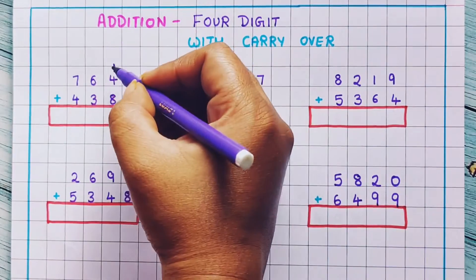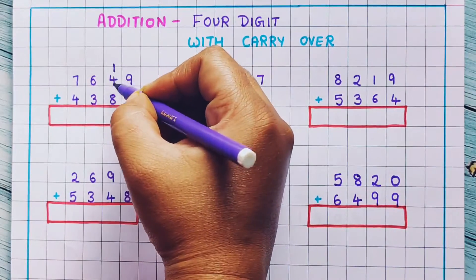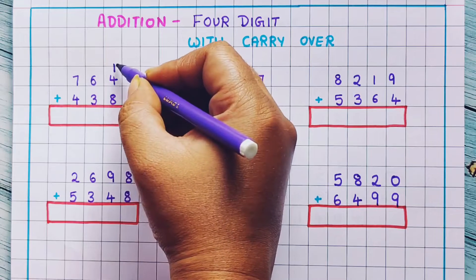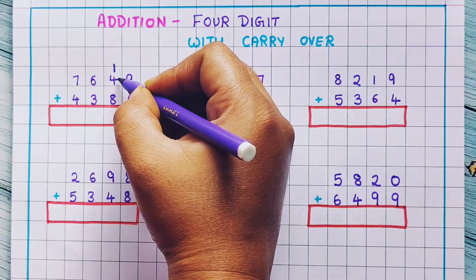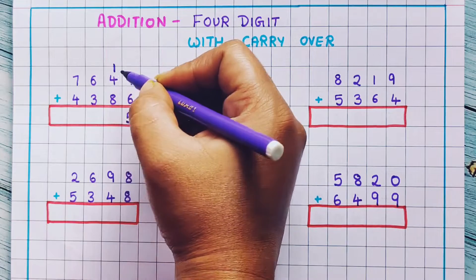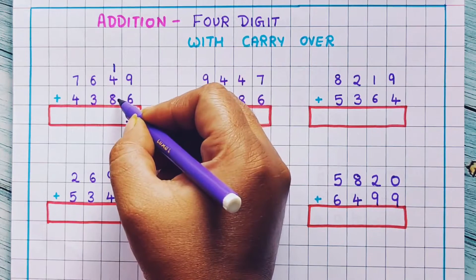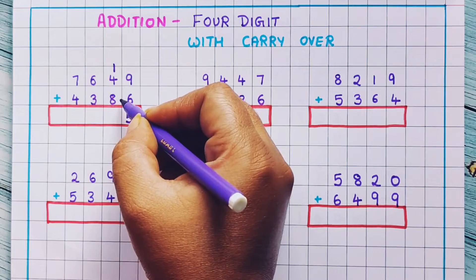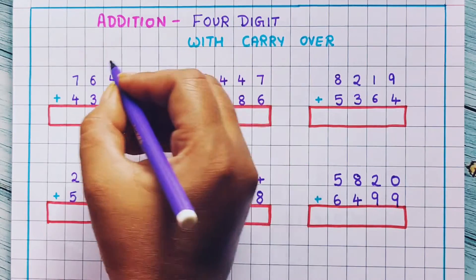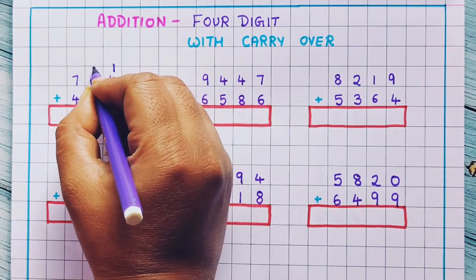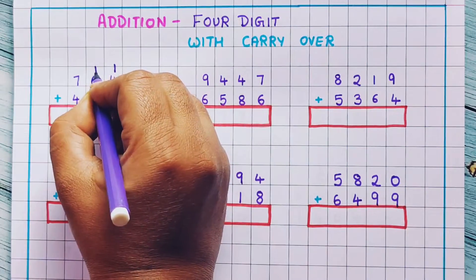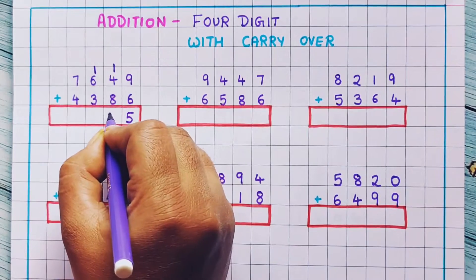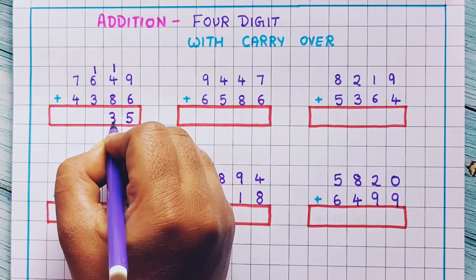Now 1 plus 4 plus 8. 1 plus 4 is 5, and 5 plus 8 is 13. So again, 13's 1 I will write here as carryover, and 3 I will write here.